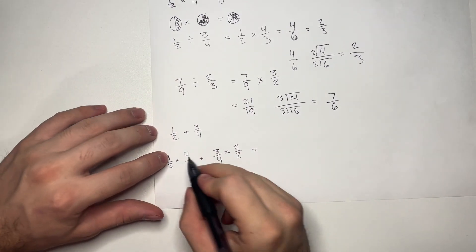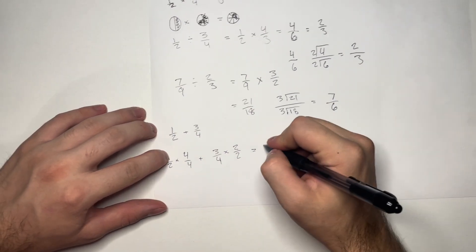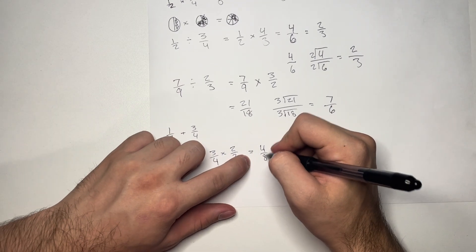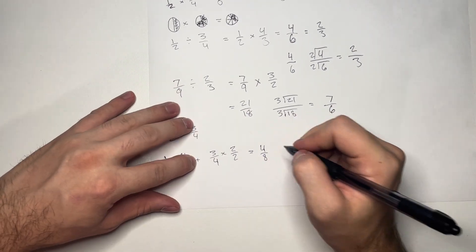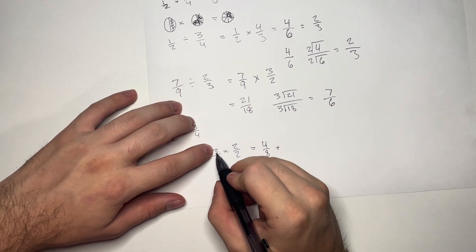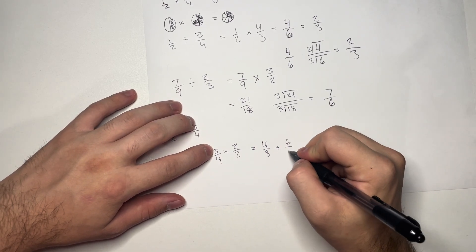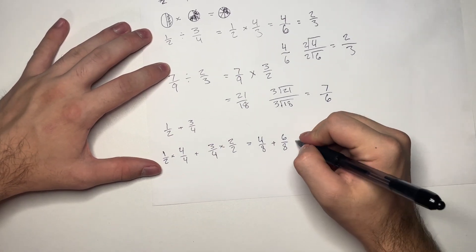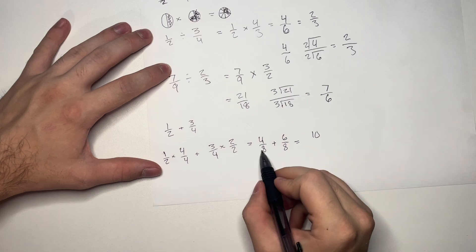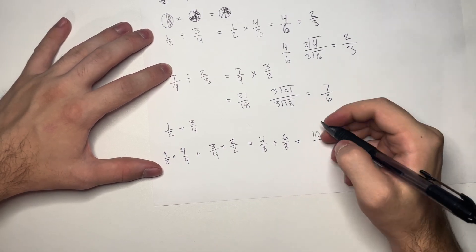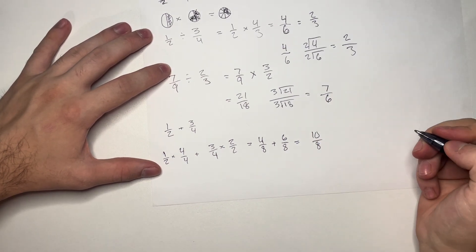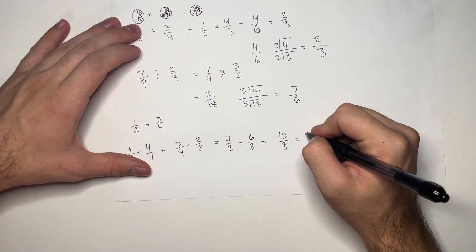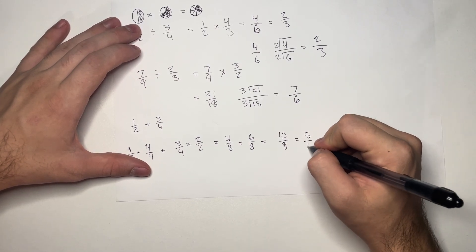And here, we're going to get 4 over 8. And here, you can very clearly see that that is equal to 1 half plus 6 over 8. And now, we add the top 2. And we keep the bottom as is. And then, we reduce. So, this is equal to 5 over 4.